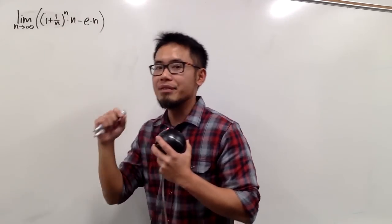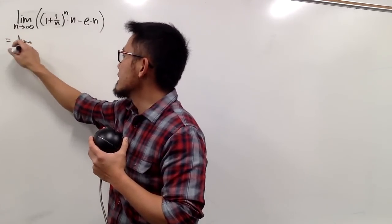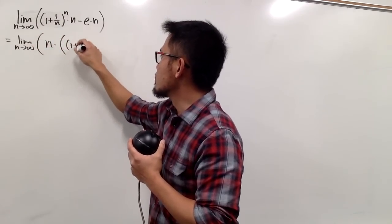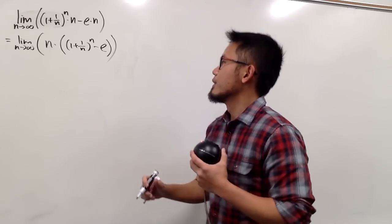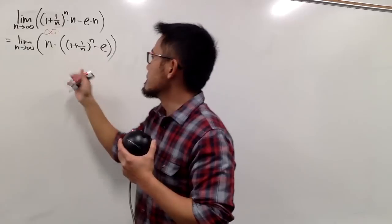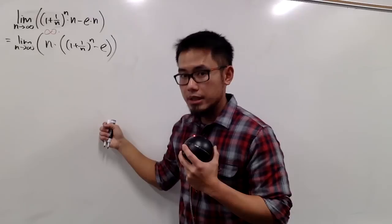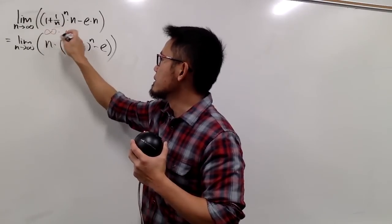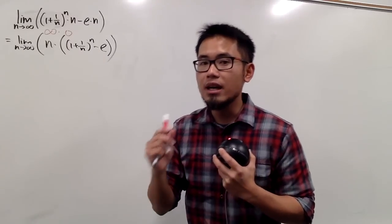Let me explain why we cannot draw any conclusion here unless we do more work. We notice that both terms have n, so we can factor it out. This gives us the limit as n goes to infinity of n times the quantity [(1 plus 1 over n) raised to the nth power minus e]. When n goes to infinity, we'd have infinity times the result of that parenthesis. Since (1+1/n)^n goes to e, we get e minus e, which is 0 — so in limit form, this is infinity times 0.